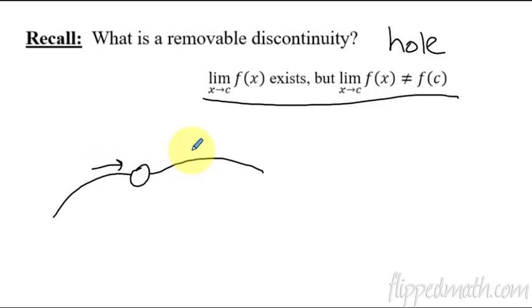So we're saying the limit exists, meaning it's coming from the left side and from the right side. It's going to the same place. But we're gonna say that the value of f(x), this is the value of f(c), some c value. Whatever that y value, it's not the same as the y value of the limit.